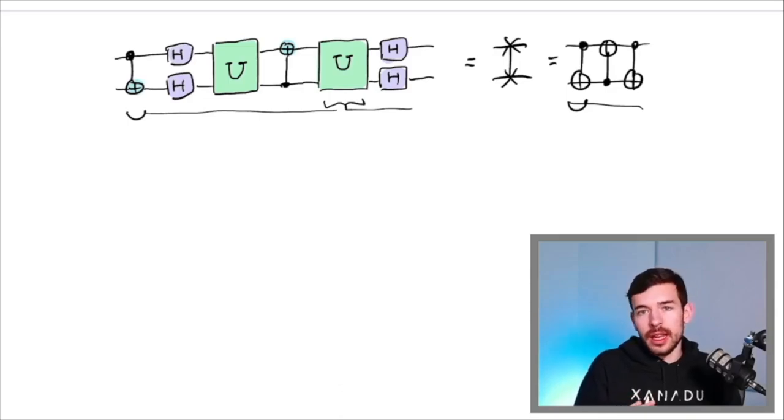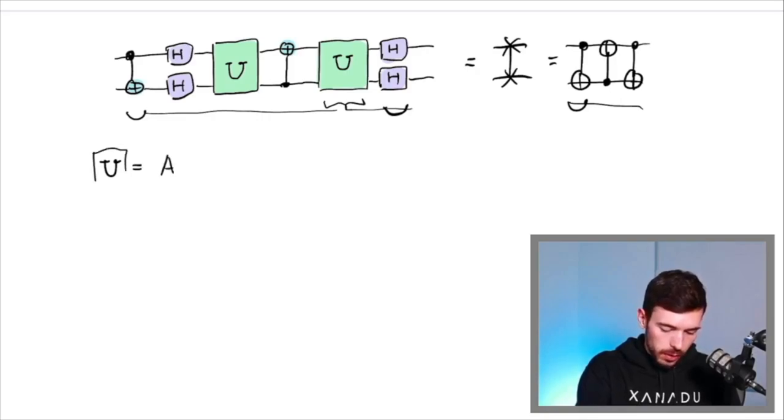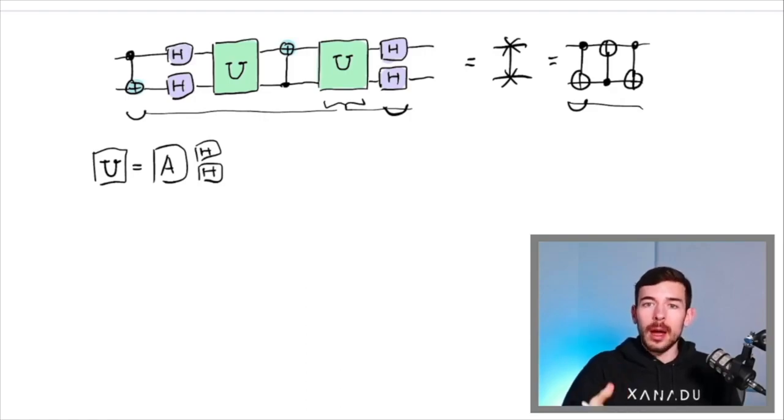However, if we check the right part of the expression, we have at the end a couple of Hadamards that, well, it's convenient if we remove them in some way. So how can we remove these Hadamards? Well, the trick here is to use a change of variable. So we can say, okay, let's guess that U, this operator that we are looking for, is something like operator A and then apply two Hadamards.